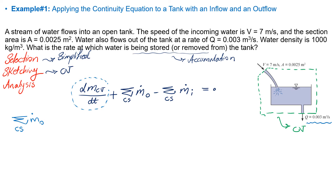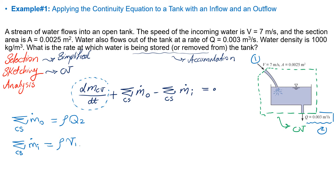You can see that instead of a mass flow rate, we have a volumetric flow rate given. It is easy because we know how to convert: mass flow rate equals density times volumetric flow rate. Because we only have one outflow, the outlet mass flow rate is density of water times Q2. The other term is the summation of mass flow rate going into the system, which if we expand the mass flow rate equation gives us rho times velocity at point 1 times area 1.